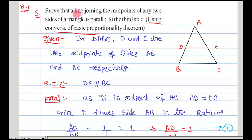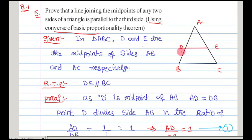To prove this, firstly, for the given data, we need to draw a suitable diagram. For that, I have taken a triangle ABC here. And in this triangle ABC, I am supposing that D and E are midpoints of two sides of the triangle, that are AB and AC.